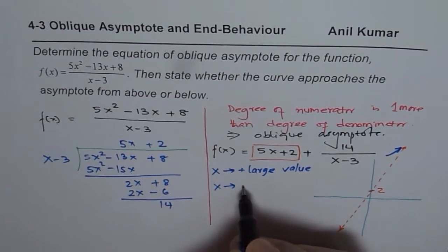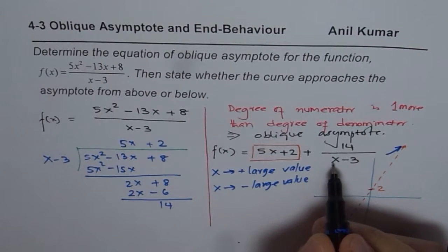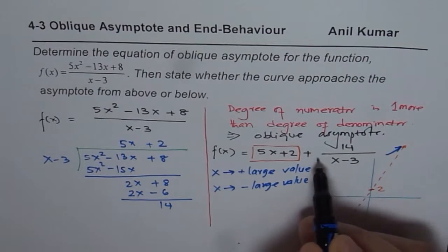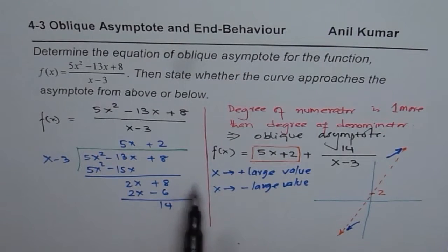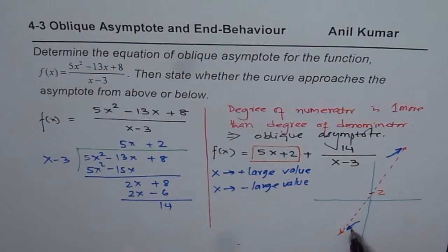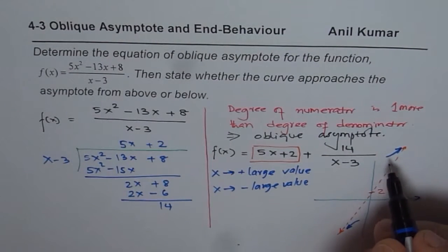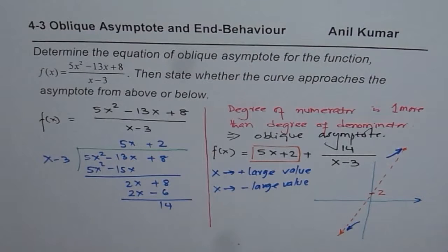Similarly, if x is approaching a large negative value, for example negative 100, then this quantity becomes negative. So we are subtracting something from the line, meaning we are approaching from below. When x approaches negative infinity, the graph of the function is below the oblique asymptote, and when x approaches positive infinity, the function approaches from above the asymptote.